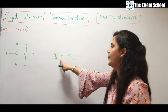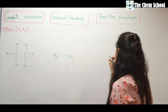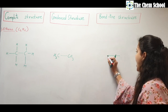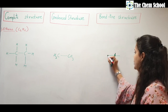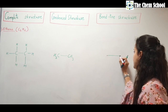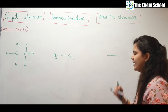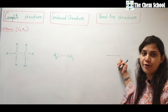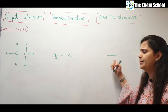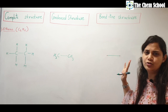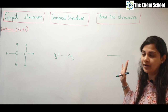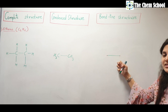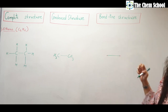In bond line, how many carbons do we have? Two. So just draw a line and check how many ends it has — the first end and the second end. The number of ends equals the number of carbons, and the valency is satisfied by the implied hydrogens. So ethane can be drawn in just a simple line form in bond line structure.